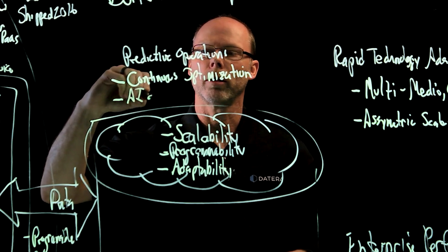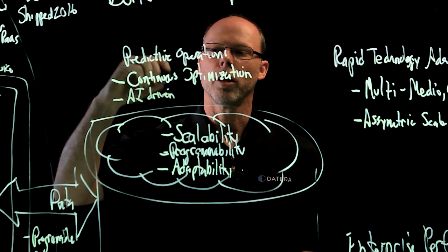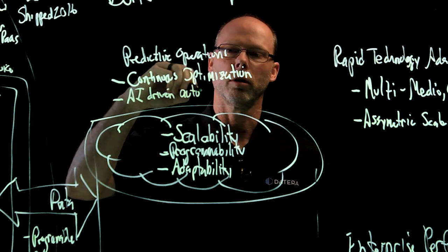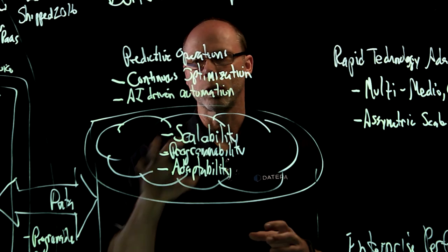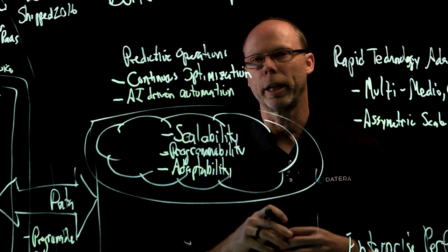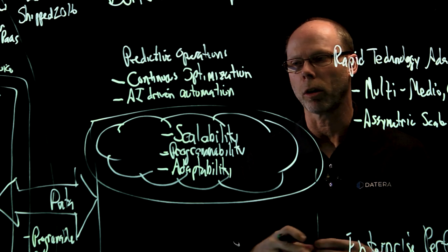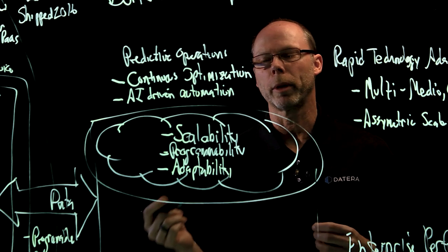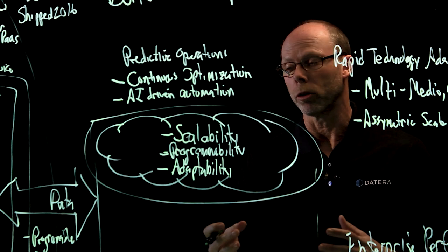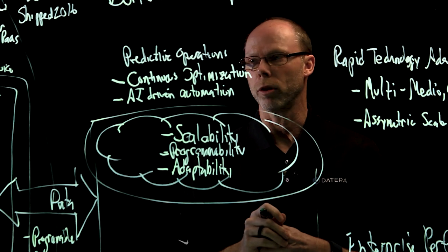And then there's AI-driven automation. This is a cloud-based application that is constantly looking at the environment similar to the continuous optimization, but it can look across a broader scope. It can look across multiple tenants, it can look across multiple systems, and then it can recommend tasks or automate those tasks to improve the efficiency of the system.